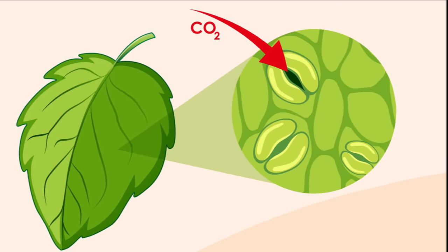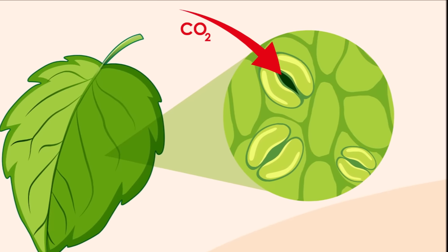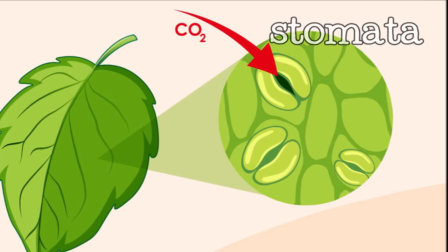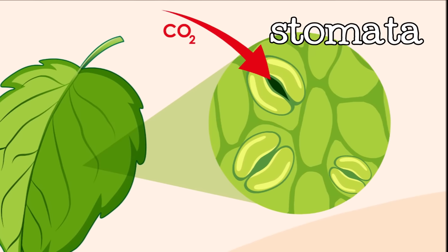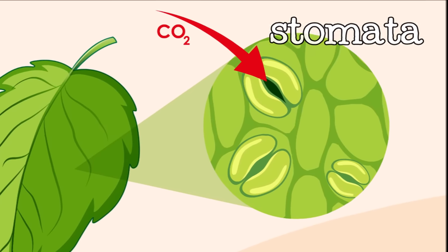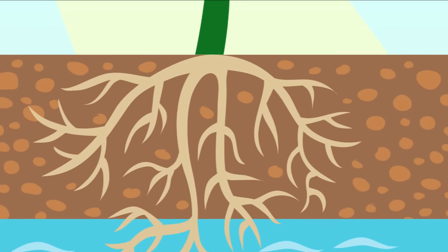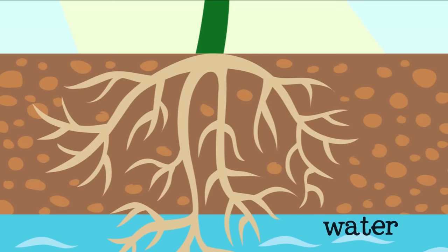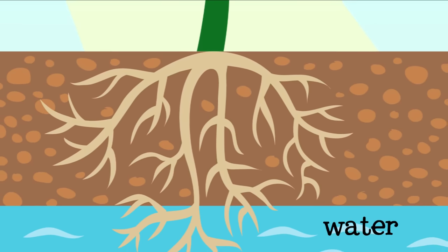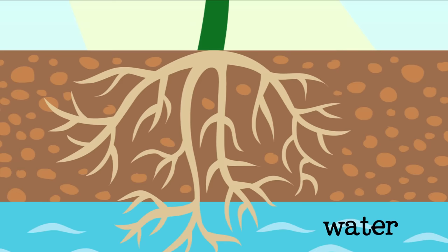Carbon dioxide from the atmosphere enters the leaves through tiny pores called stomata. Finally, the plant takes in water and other nutrients from the soil, typically through its roots. This water travels up the stem of the plant to the leaves, where it's used in photosynthesis.